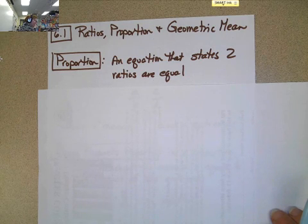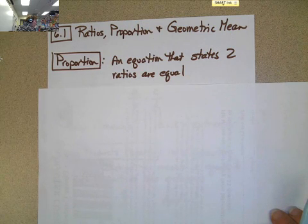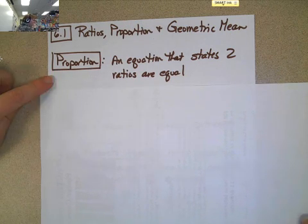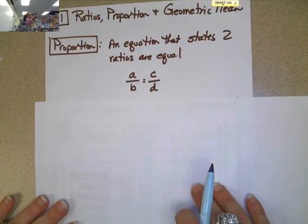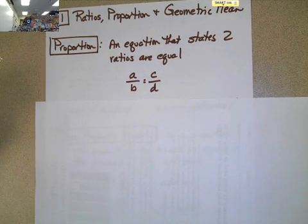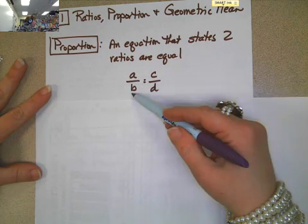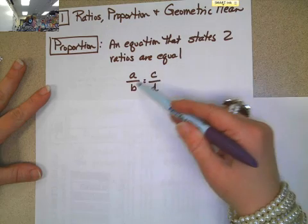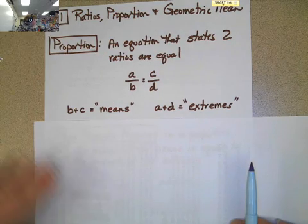A proportion is when you have two ratios that are equal to each other. So it's an equation that has a ratio on each side that would mean that one ratio is equal to the other. So, looking at it with all variables, we have A over B equals C over D. Some more terminology is that B and C, whatever numbers are in these two places, are called the means and A and D are called the extremes.